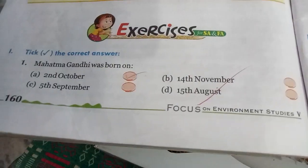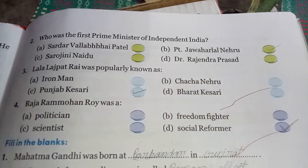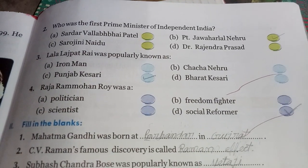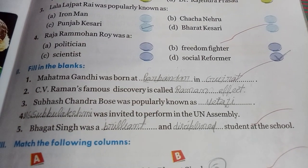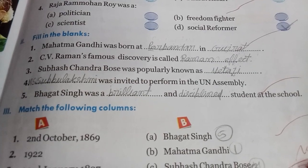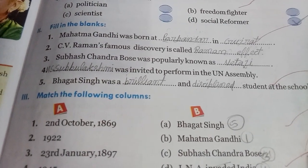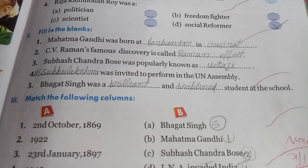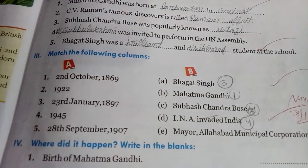Mahatma Gandhi was born on 2nd October. He was the father of the nation, not the prime minister of independent India — false for national anthem. He is popular for the Punjab — false. Raja Rammohan Roy was a social reformer. Mahatma Gandhi is the pride of Gujarat. Mahatma Gandhi was born on 2nd October.